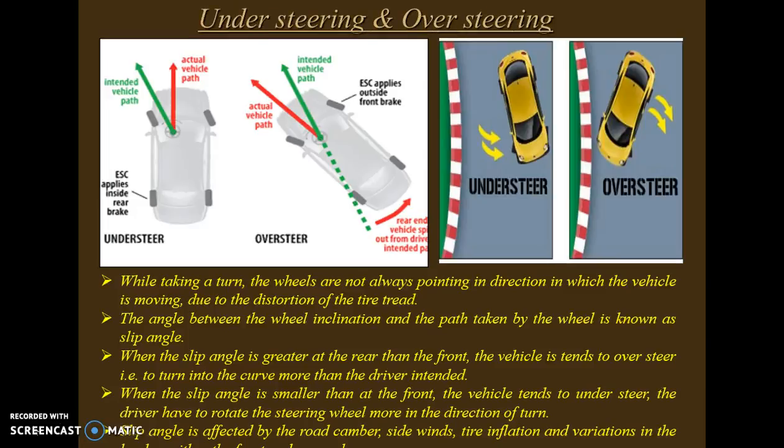Understeering and oversteering: while taking a turn, the wheels are not always pointing in the direction in which the vehicle is moving due to tire distortion. The angle between the wheel inclination and the path taken by the wheel is known as the slip angle. When the slip angle is greater at the rear than the front, the vehicle tends to oversteer. When the slip angle is smaller at the front, the vehicle tends to understeer, and the driver has to rotate the steering wheel more in the direction of the turn.